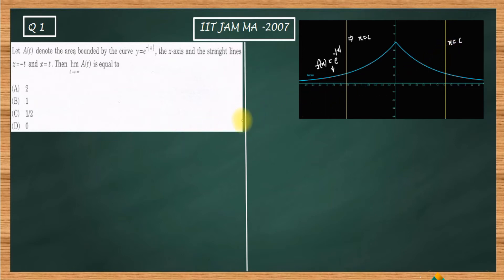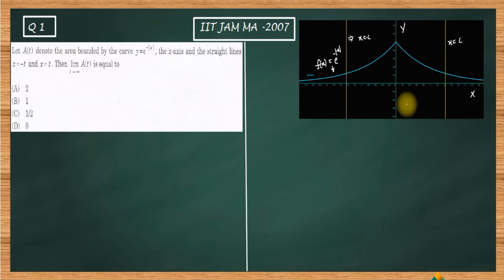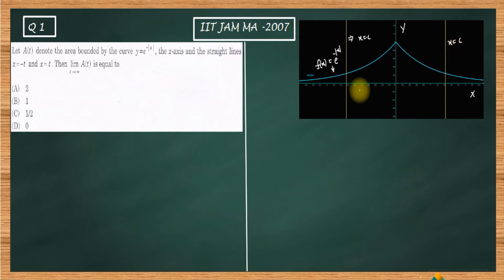I have drawn x = c instead of x = t because in this format we cannot draw the parametric curve directly. This is our x-axis and this is our y-axis, so we don't have a t-axis here. Drawing x = c is what will matter for us. Now let us proceed to our solution.